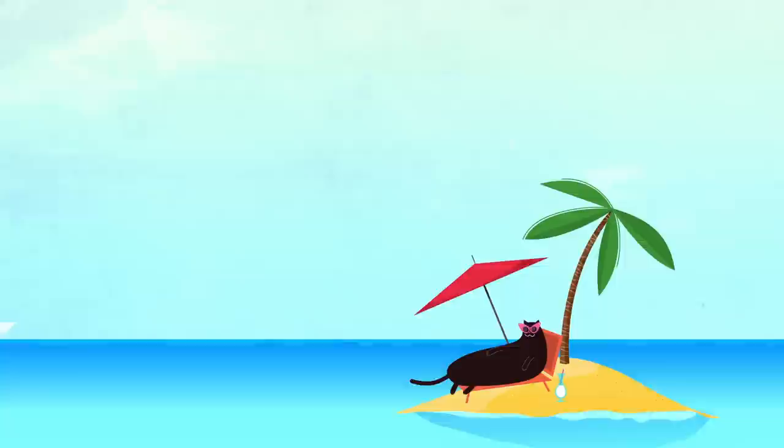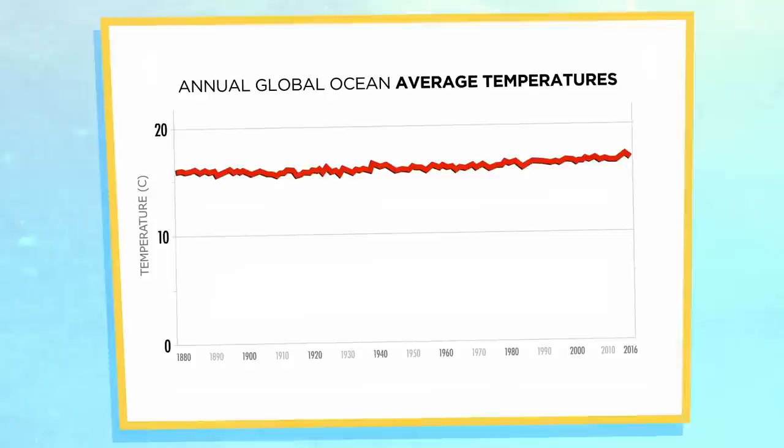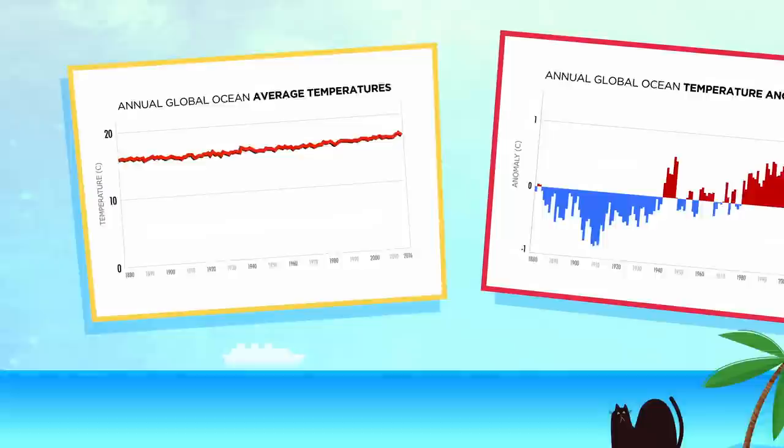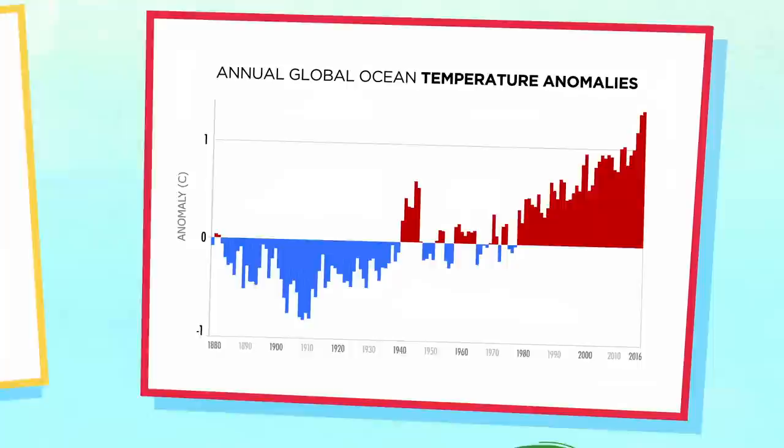A graph can't tell you much if you don't know the full significance of what's being presented. Both of the following graphs use the same ocean temperature data from the National Centers for Environmental Information. So why do they seem to give opposite impressions? The first graph plots the average annual ocean temperature from 1880 to 2016, making the change look insignificant. But in fact, a rise of even half a degree Celsius can cause massive ecological disruption. This is why the second graph, which shows the average temperature variation each year, is far more significant.